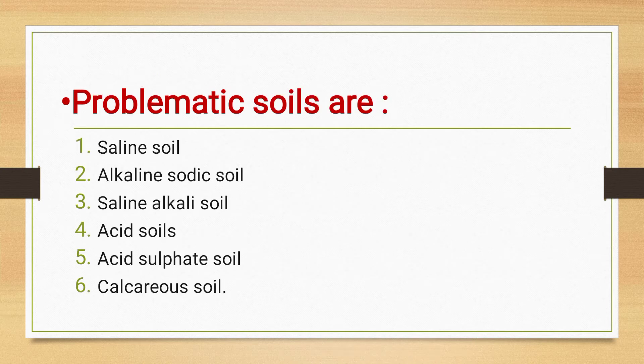There are a total of six problematic soils seen in India. First is the saline soil, second is the alkaline sodic soil, third is the saline-alkali soil, fourth is the acid soil, fifth is the acid sulfate soil, and sixth is the calcareous soil. Today we have discussed only the saline soil.